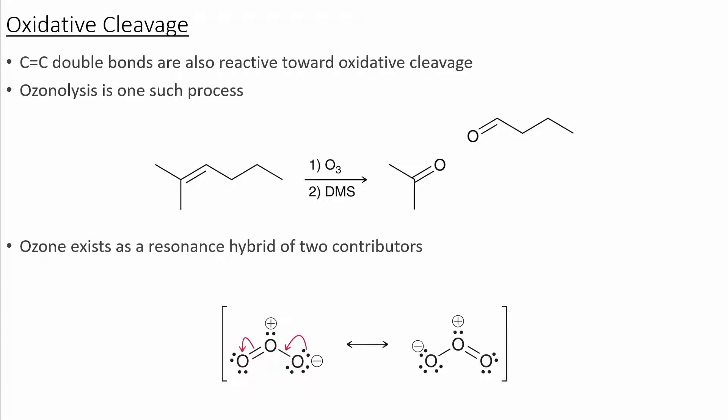The next process that we'll look at is oxidative cleavage. This is different than addition — we're going to undergo a much different mechanism to obtain these products. In this reaction, we're going to cleave carbon-carbon double bonds, and in the process of cleaving these bonds, we're going to form two new carbon-oxygen double bonds.